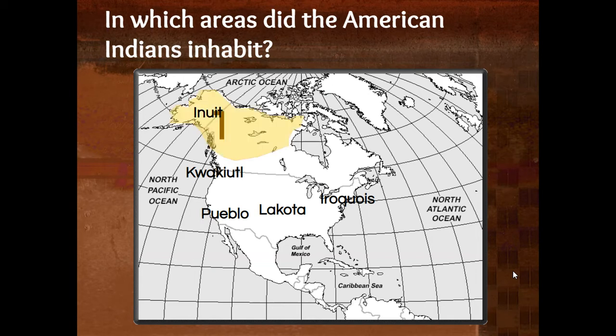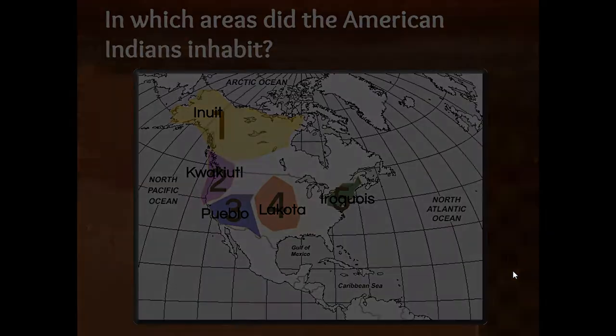They are the Inuit tribe in Alaska and northern Canada, the Kwakiutl tribe in the Pacific Northwest, the Pueblo tribe in the Southwest, the Lakota tribe in the Great Plains, and the Iroquois tribe in the Eastern Woodlands.